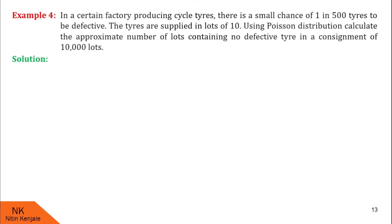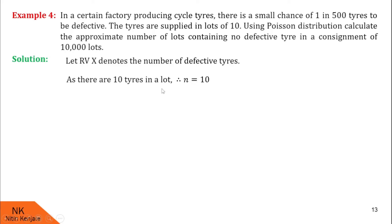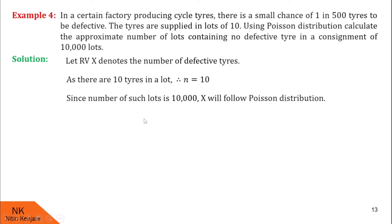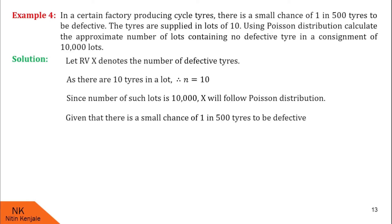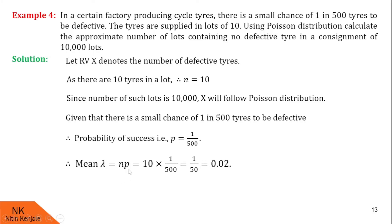Let x be the random variable denoting the number of defective tires in a lot. Since there are 10 tires in a lot, n equals 10. As there are 10,000 lots in consideration, x follows Poisson distribution. Getting a defective tire indicates a success, and the chance is 1 in 500, so probability of success p = 1 over 500. Therefore, mean lambda = n into p = 10 into 1 over 500 = 0.02.